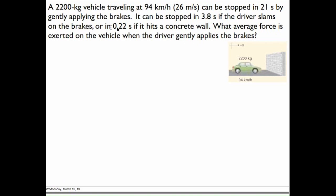A 2200-kilogram vehicle is traveling at 94 kilometers per hour, but we're going to use meters per second. They've already converted it for you, which is really nice.